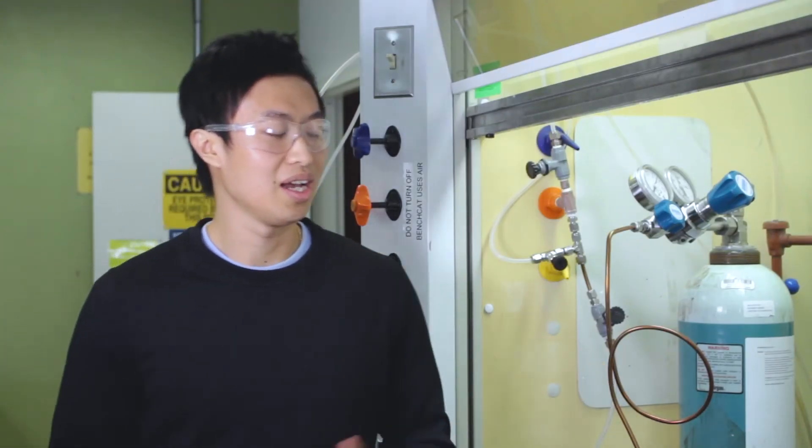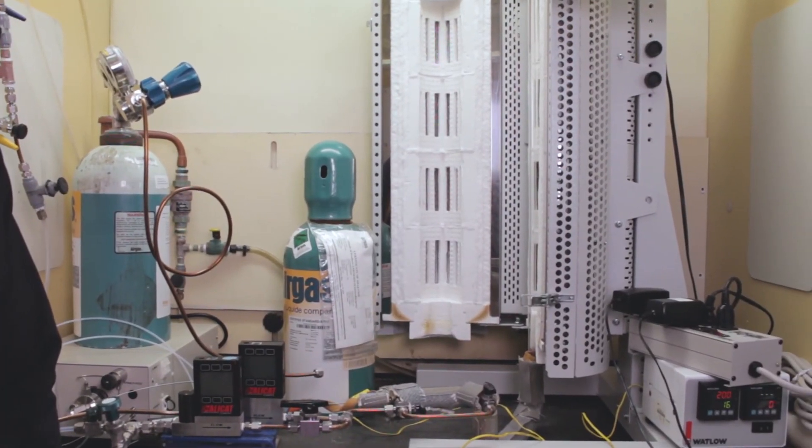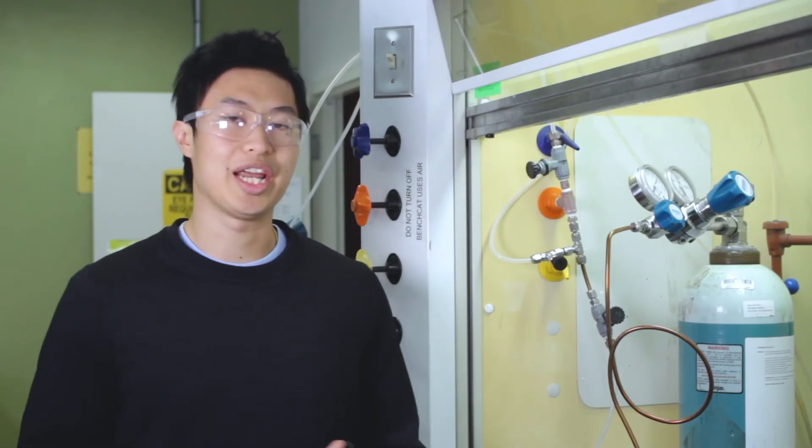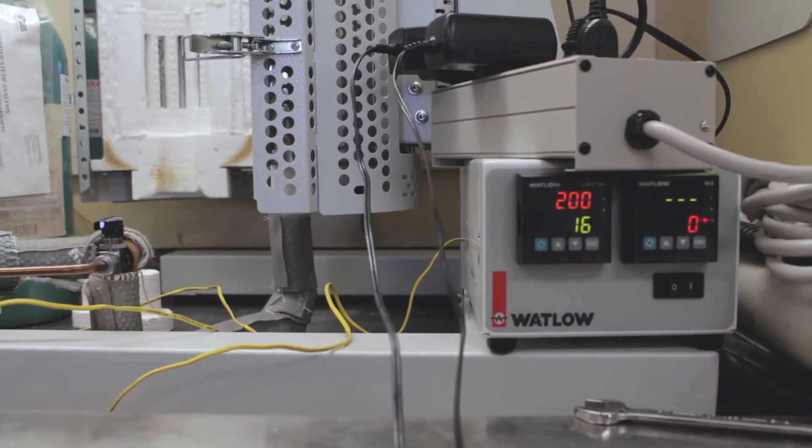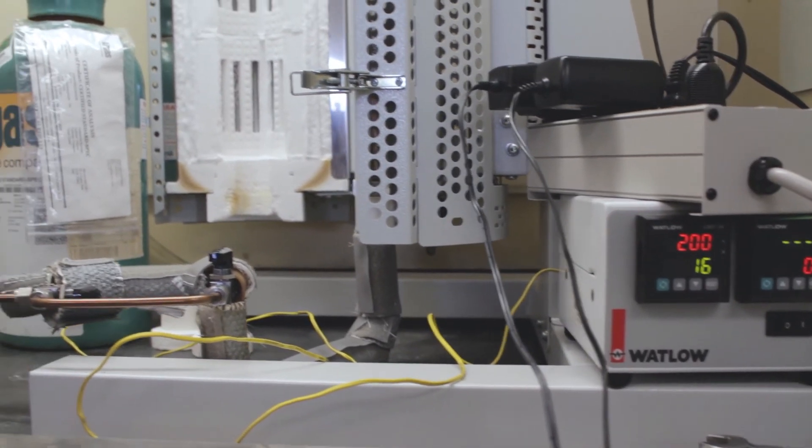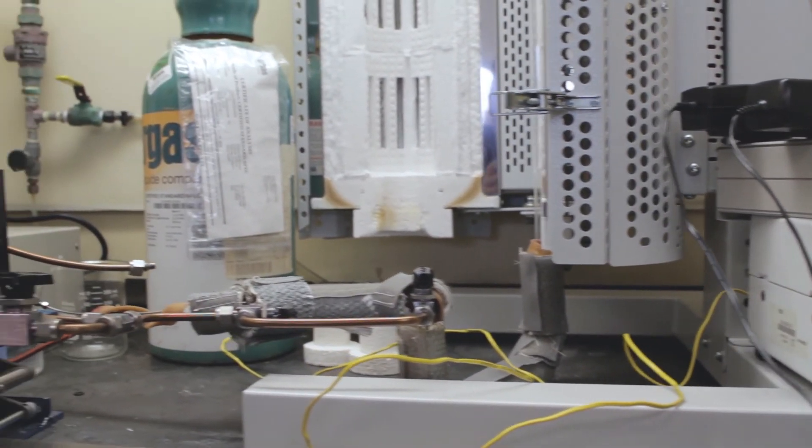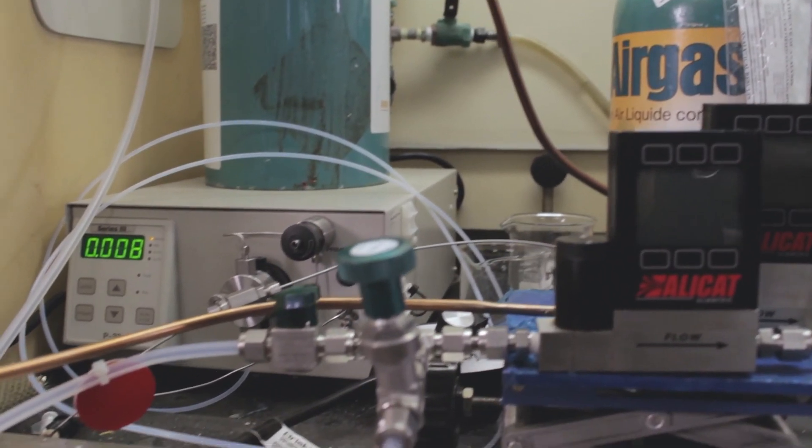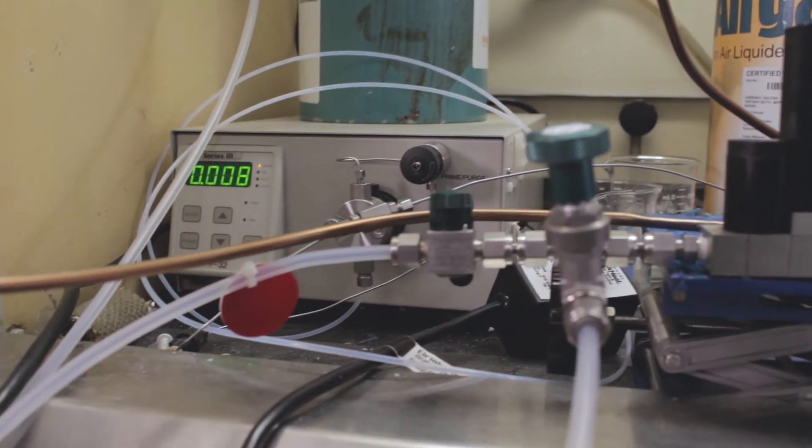Over here you see a reactor which is designed for hydrodesulfurization or HDS. So HDS is used to convert big sulfur compounds found in transportation fuels to smaller ones which are more easily absorbed. And as a result, we do not emit too much sulfur into the environment.